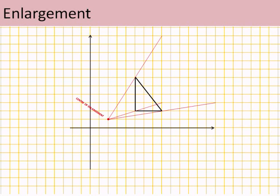Then I draw lines from the centre of enlargement to the shape and beyond. Now, I've drawn the line twice as far from the centre of enlargement as the original shape, because I want a scale factor 2 enlargement, and there it is.